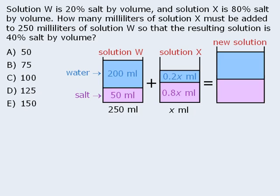Now when we add these two solutions, we get a new solution. To determine the various volumes of this new solution, we will combine like parts. Since we are combining 250 milliliters of solution W with x milliliters of solution X, the new solution must have a volume of 250 plus x milliliters. Since solution W has 50 milliliters of salt and solution X has 0.8x milliliters of salt, the new solution must have a total of 50 plus 0.8x milliliters of salt.